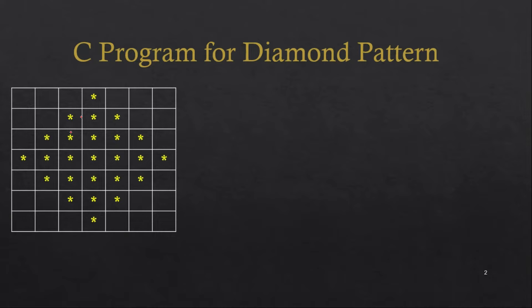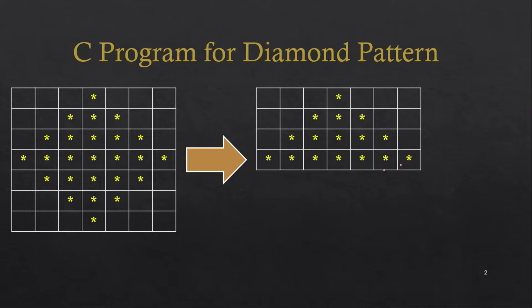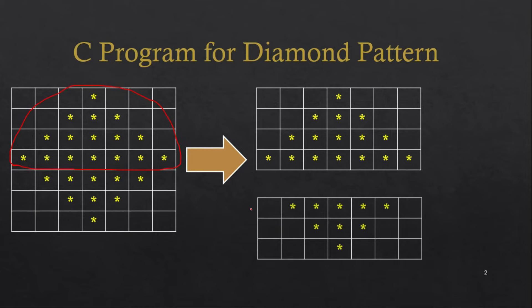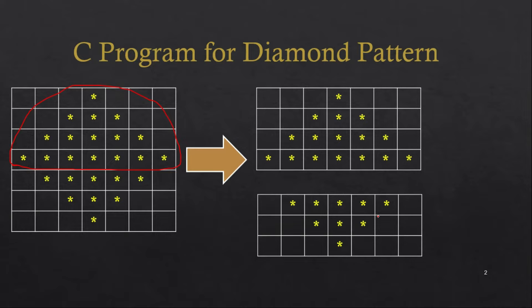In a diamond pattern we have a number of rows and columns. We can see there are four rows and seven columns. We consider the upper part of the diamond as a half pyramid, and then we print the lower part below it. Here the number of rows is four — one, two, three, four — and the number of columns is seven.